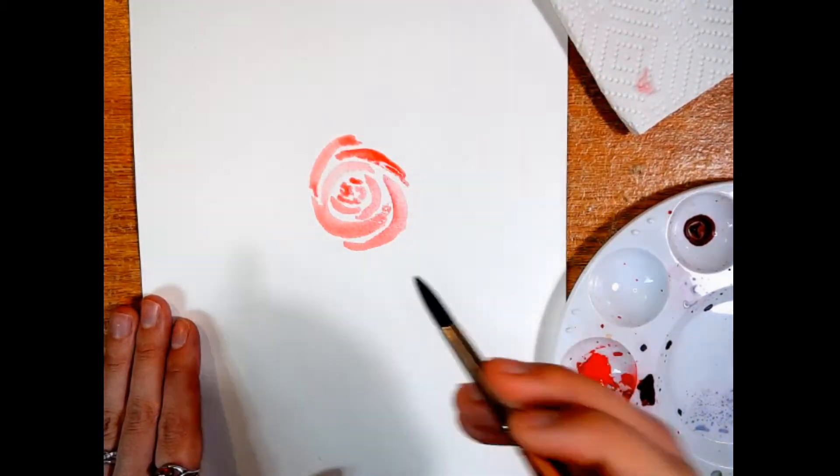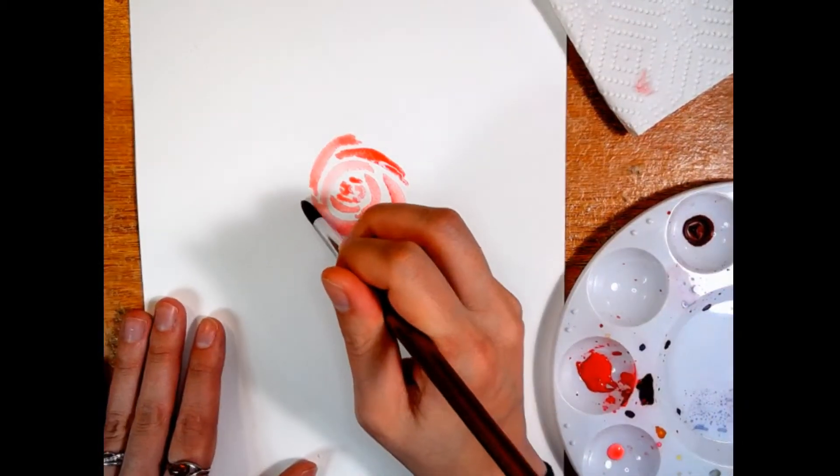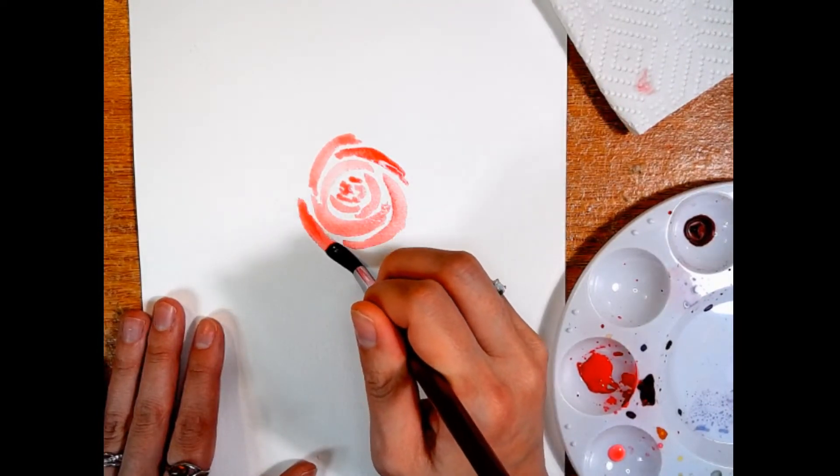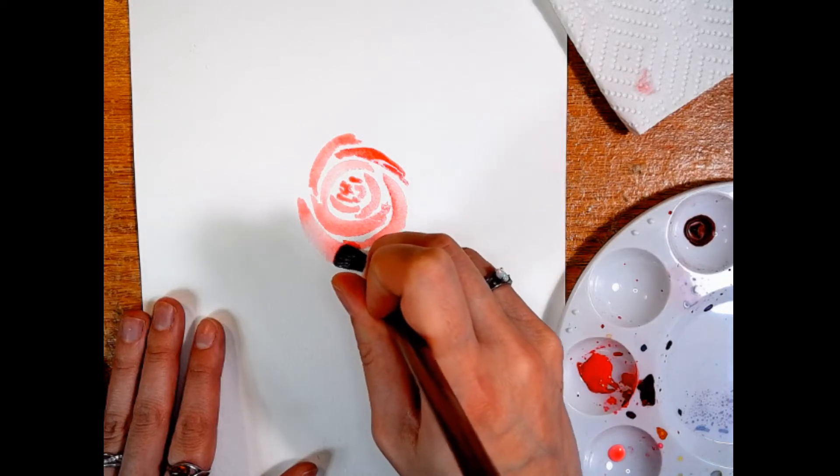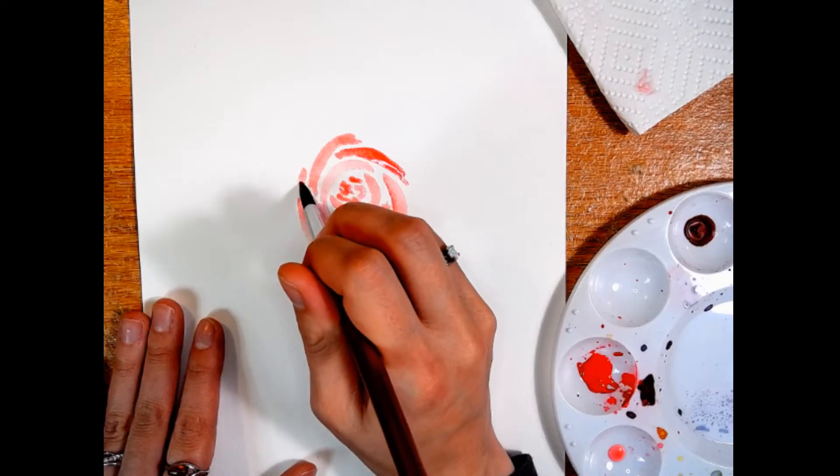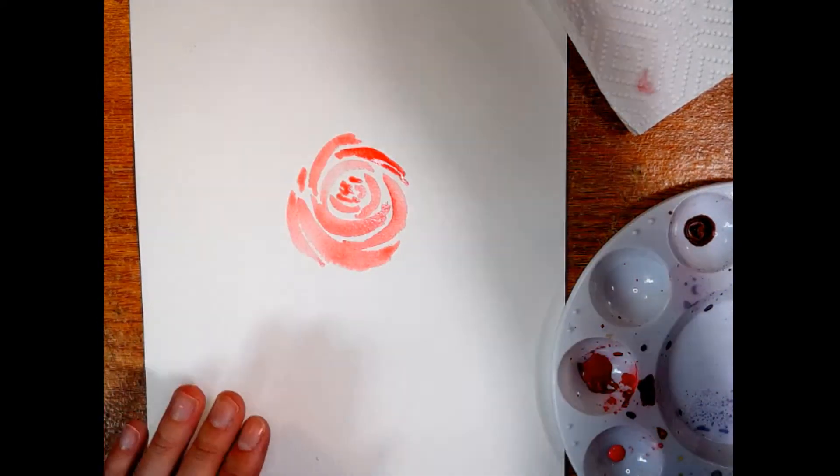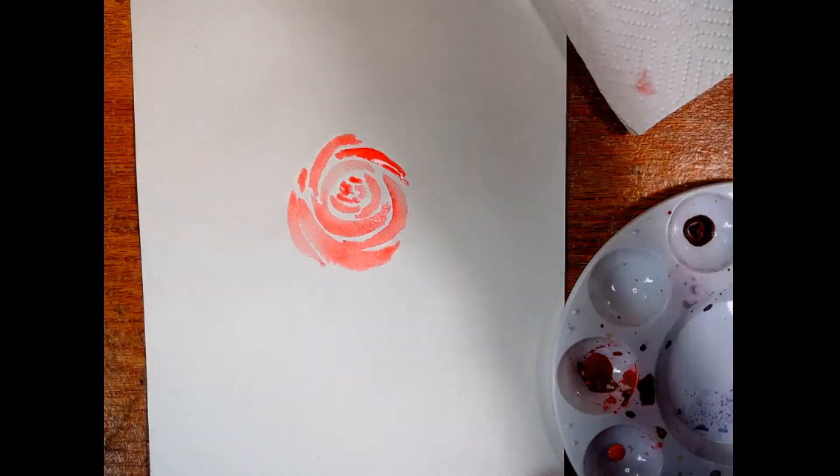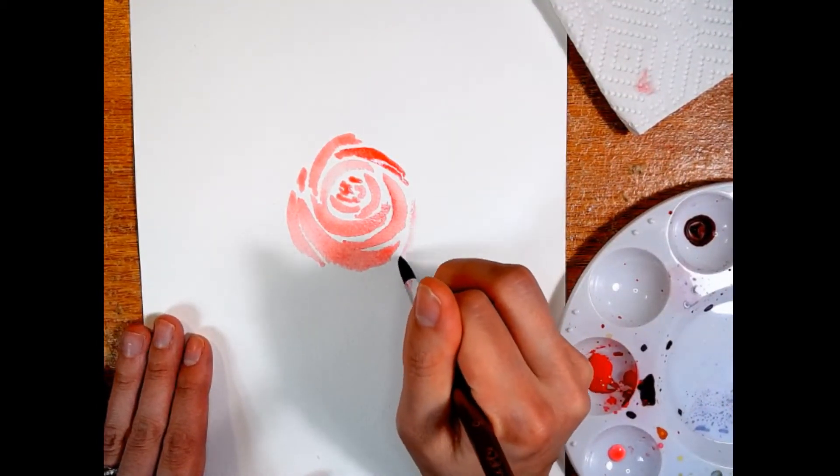Like this. And then I'm going to do a couple larger ones, and it's okay if the petals touch each other slightly. You'll get what's called a slight bleed effect, and that's where the two petals will run into each other because they are both wet.